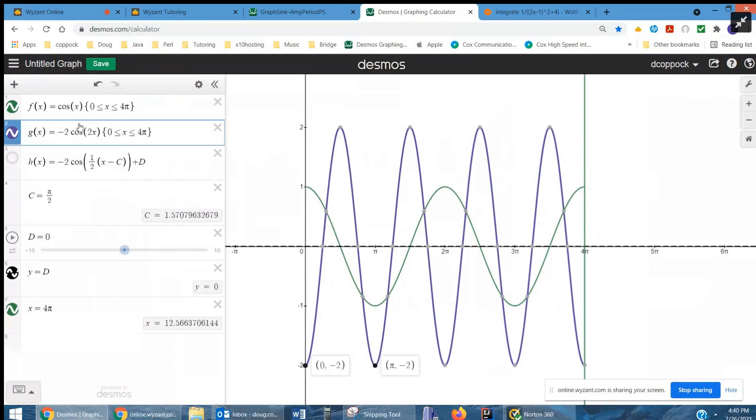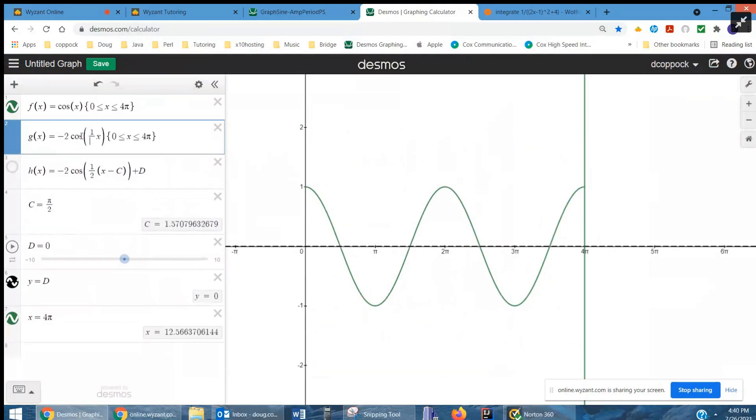If I change this 2 to a 1/2, now it takes all the way to 4π before another cycle appears on the graph. We call that a horizontal stretch.